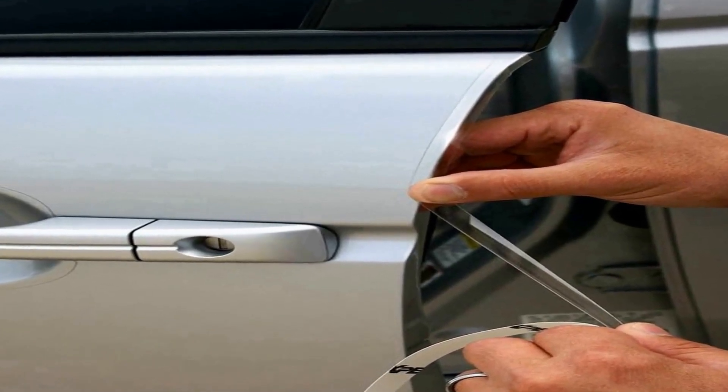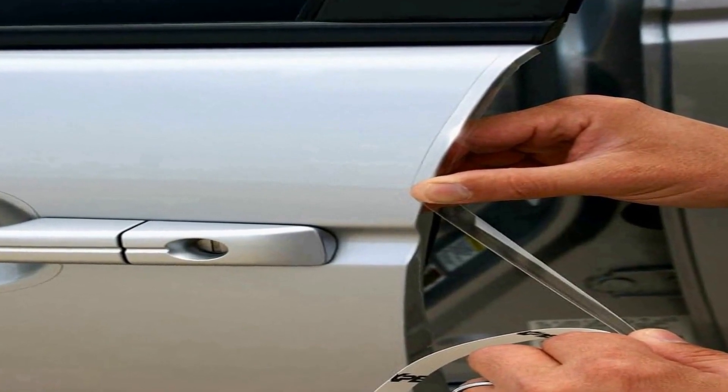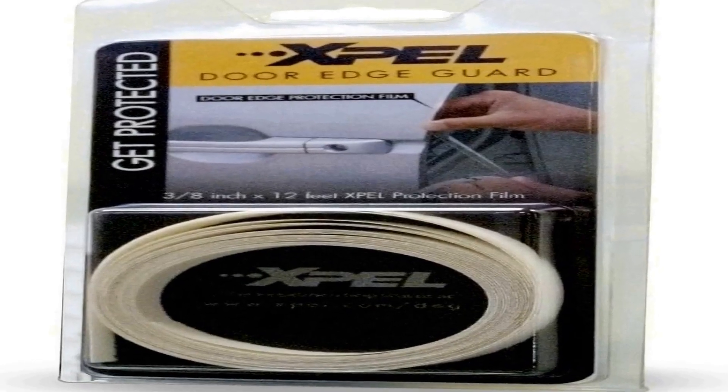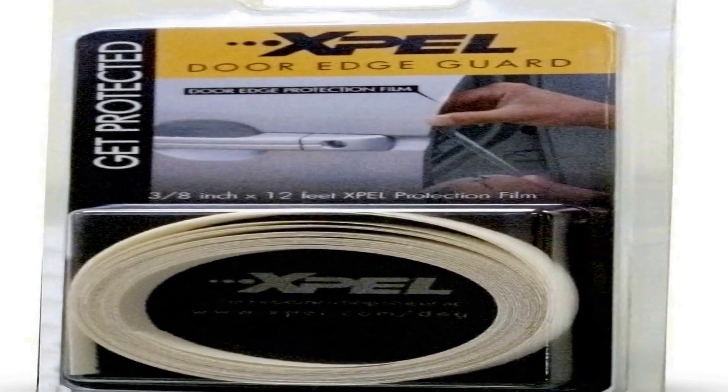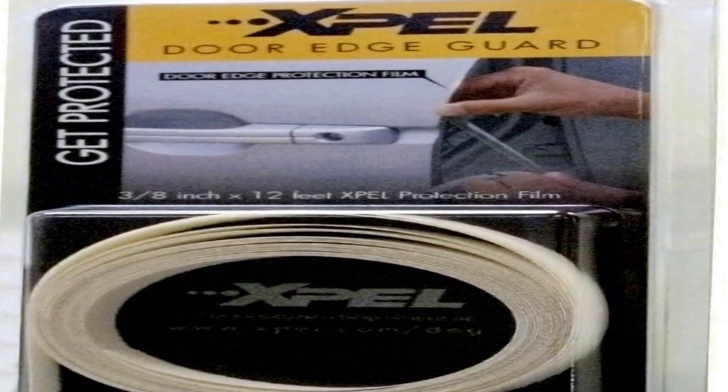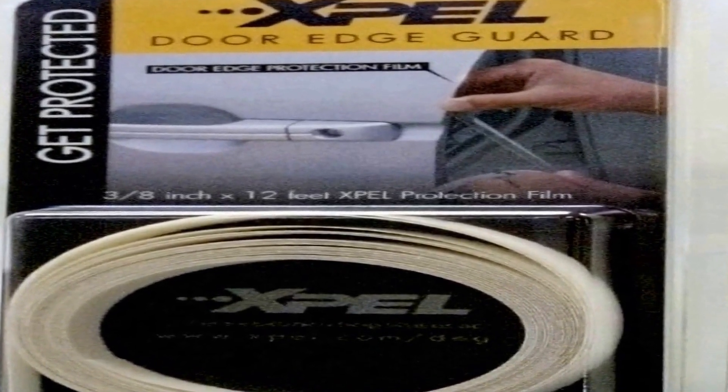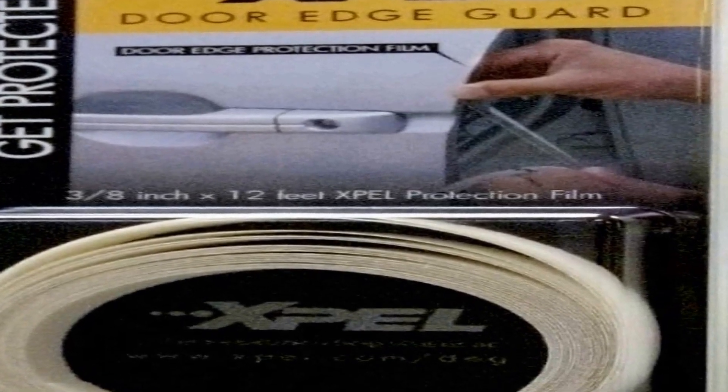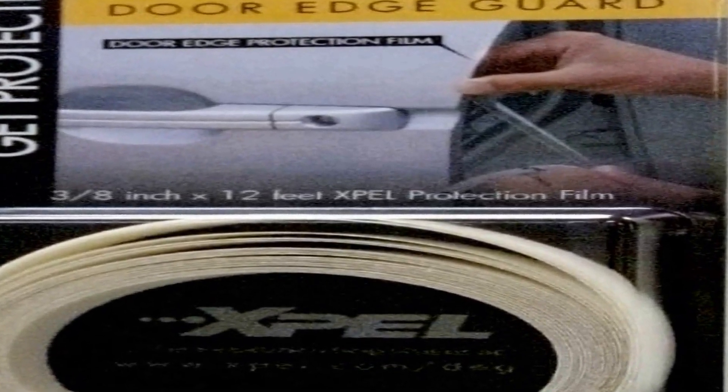The film measures 0.38 inches in width and 12 feet in length, providing ample coverage to protect your vehicle's door edges from the impact of everyday wear and tear, such as scratches, scuffs, and minor dings. Installation is hassle-free thanks to the universal design of this kit.